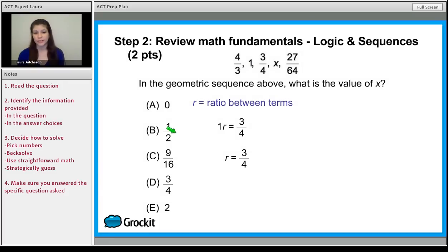And you can ask yourself, does this make sense? If I take 4 over 3 and multiply it by 3 over 4, do I get 1? Yep. If I take 1 and multiply it by 3 over 4, do I get 3 over 4? Uh-huh. So how do you get X? Take the term that's right in front of it, multiply it by the R, and you're going to get the value of X.